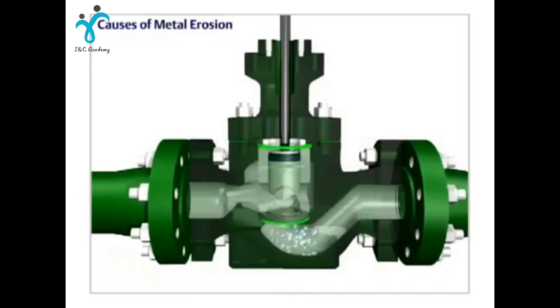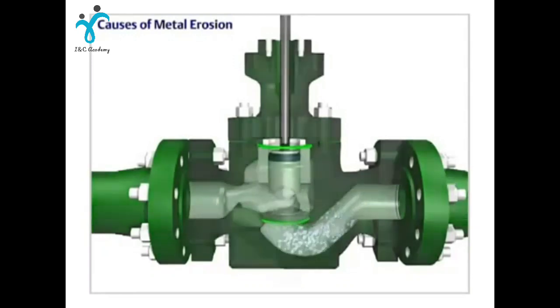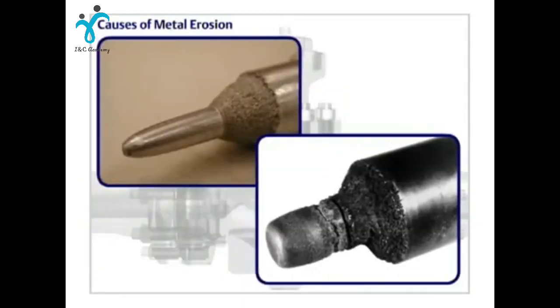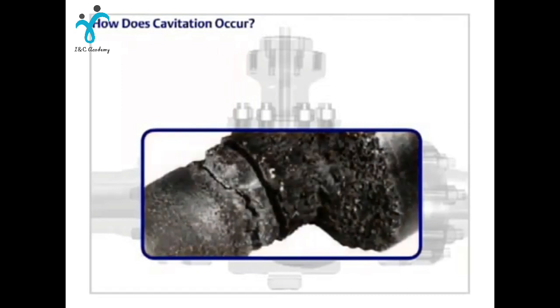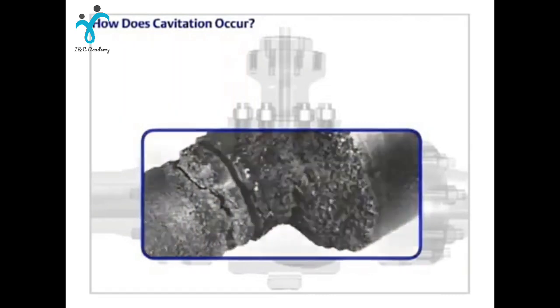Cavitation occurs when the fluid vaporizes then returns to a liquid state as the pressure increases downline. The metal damage caused by cavitation is rough and irregular due to pitting of the surface. Cavitation is a major source of damage in control valves and other components.